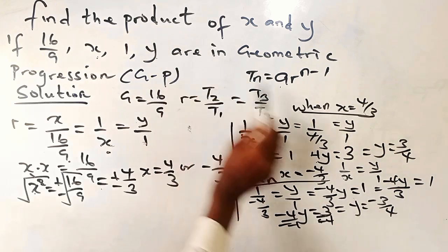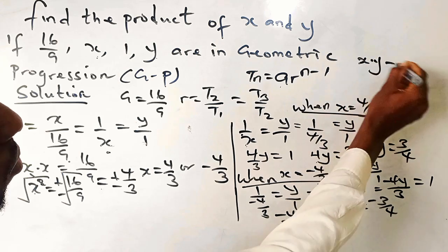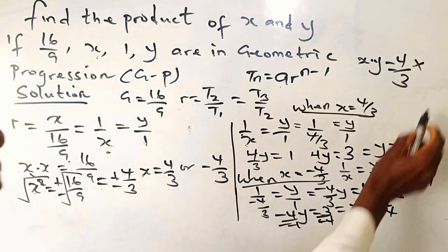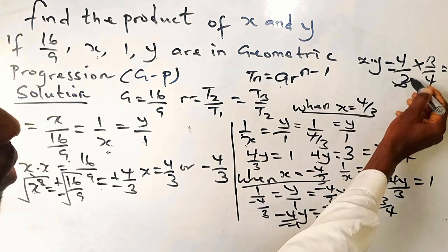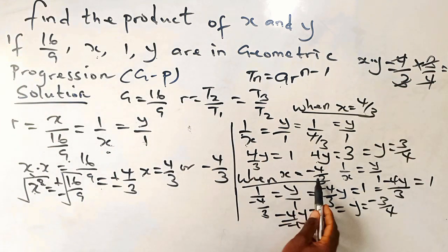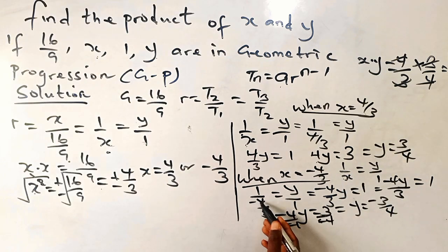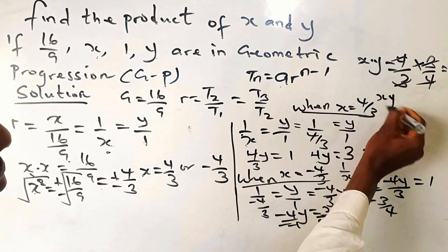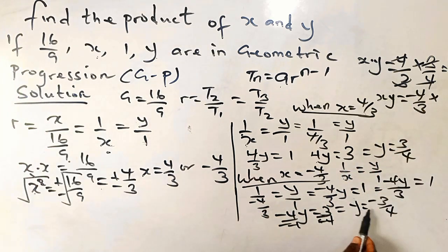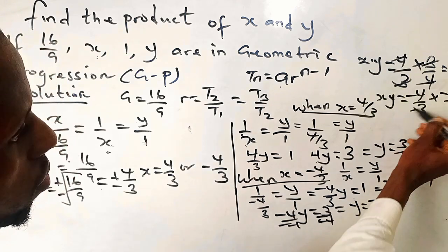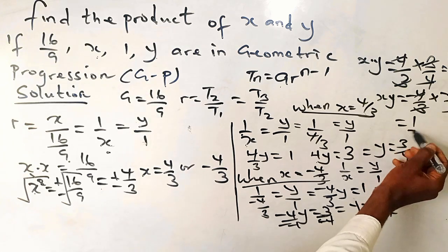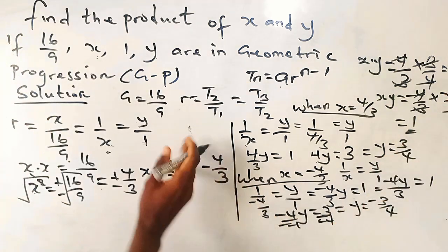So the value of x and y: when x equals 4 over 3 and y equals 3 over 4, the product x times y equals 1. When x equals minus 4 over 3 and y equals minus 3 over 4, the product is minus 1 times minus 1, which is positive 1. So in both cases, the product of x and y is 1. Thank you very much.